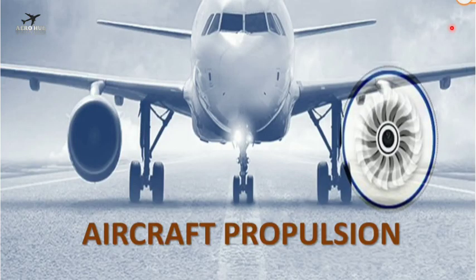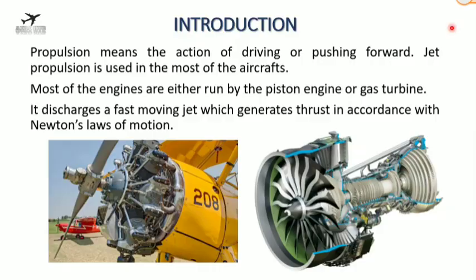Hello everyone, welcome to Aero Hub. Today I'll be talking about aircraft propulsion — how thrust is produced and what are the different kinds of engines used. We know that thrust is produced by engines. The engine is the one that drives an aircraft forward. These are air-breathing engines.